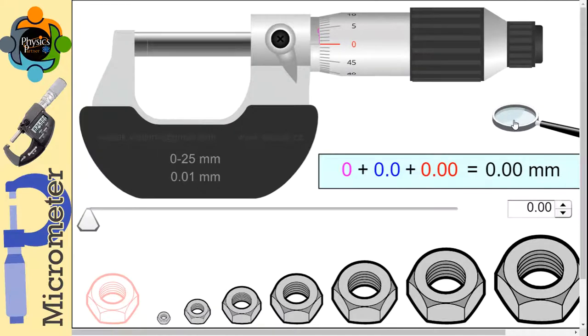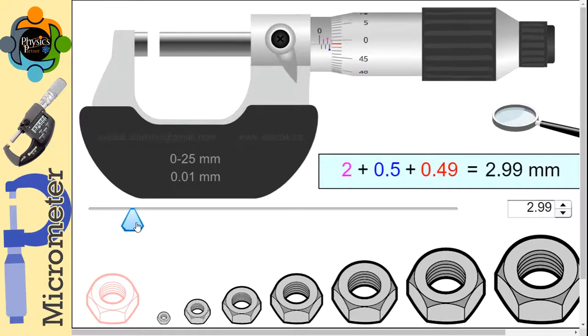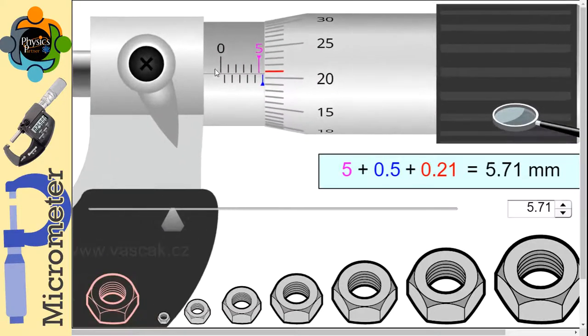Let us understand how we can use the micrometer to measure some radius. If I start opening the micrometer, you can see some readings are going to change. There are three types of readings here. Number one is the purple one, which is the main scale reading.